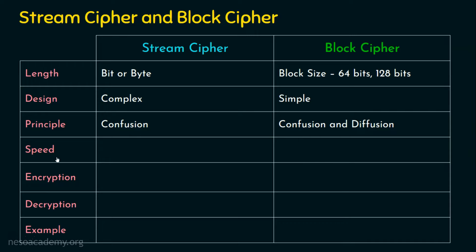Coming to speed, which one is faster? Generally, stream ciphers are faster than block ciphers. You may wonder how, since stream ciphers take input bit by bit while block ciphers take a group of bits. But generally stream ciphers are faster than block ciphers — to understand why, don't miss watching this complete lecture series, and then you will be able to understand the reason.